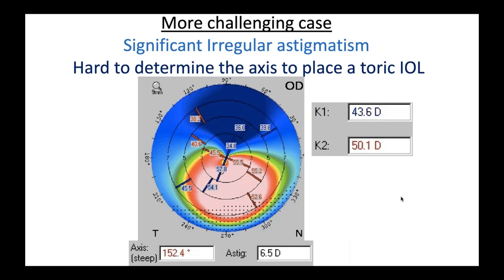Here's a patient with significant irregular astigmatism — 6.5 diopters of astigmatism at axis 152. While it is possible to place a toric lens at axis 152, the problem is they have so much irregularity — flat above, very steep below — and they're going to have reduction of best corrective visual acuity. This patient may end up needing a scleral lens, and it's better not to have a toric lens if you're going to do a scleral lens. So I would typically use a monofocal lens and recommend scleral lens fitting afterwards, plus consider cross-linking.